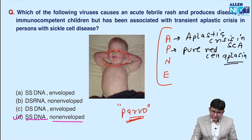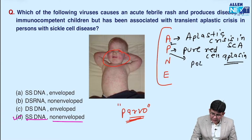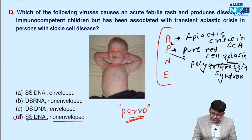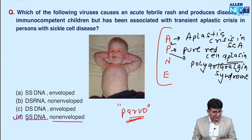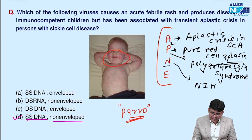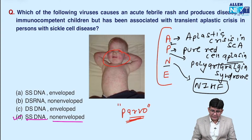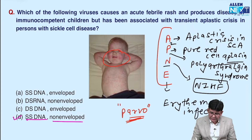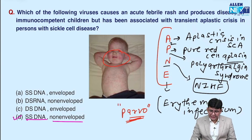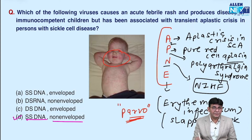Continuing with the APNE mnemonic: P is for Pure Red Cell Aplasia — Parvovirus B19 is strongly associated with pure red cell aplasia. The next P is for Polyarthralgia syndrome, where there is upper limb joint pain more than lower limb joints. N is for Non-Immune Hydrops Fetalis (NIHF) — in a pregnant female, Parvovirus causes non-immune hydrops fetalis. E is for Erythema infectiosum, the fifth disease, with the slapped cheek appearance.